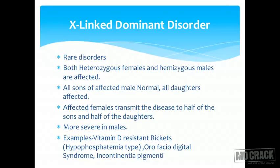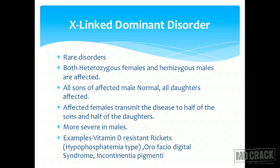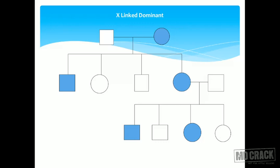Examples of X-linked dominant disorders are rare: vitamin D-resistant rickets, oro-facio-digital syndrome, and incontinentia pigmenti. Wherever the dominant X goes, you have the disease. An affected father passes his Y to sons — who are normal — and his disease-carrying X to daughters — who will have the disease. This is what is shown on the pedigree chart for X-linked dominant inheritance.